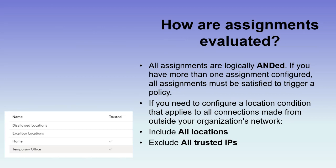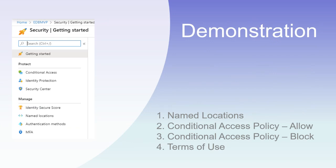If you want to configure a location condition that applies to every connection from outside your network, you could include all locations but exclude trusted IPs. Best practice: for every single conditional access policy, make sure one of your global admins — a break glass account — is excluded, so that if anything goes wrong they can always sign in without MFA, allow another global admin in, and then seal that policy up again. Now we're going into a demonstration — we'll look at named locations, create a couple of named locations, create an allow policy, create a block policy, show terms of use, and then see it in action.